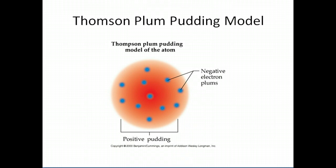After Thompson discovered the electron, Dalton's uniformly dense sphere model of the atom was no longer correct, and a new model was put into effect — Thompson's plum pudding model. Thompson described the atom as some pudding, where all the pudding was the positively charged part of the atom, and the plums or raisins in the pudding were the negatively charged electrons. This was the model of the atom towards the end of the 1800s.